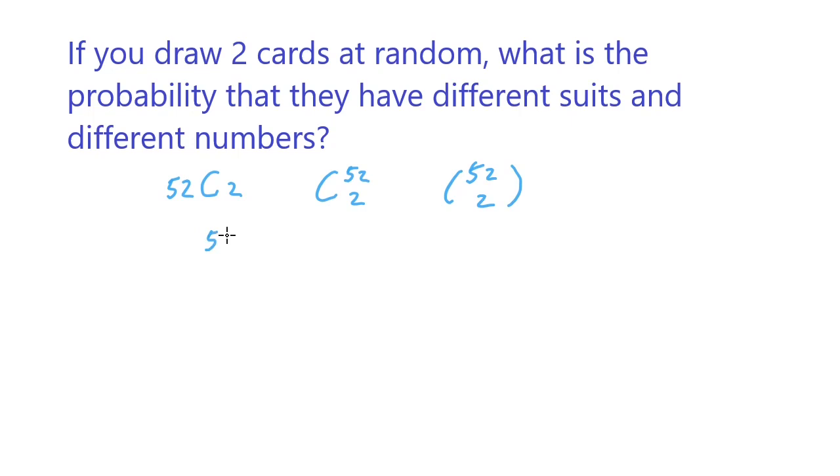The answer is going to be 52 factorial divided by 2 factorial times 52 minus 2 factorial. If you simplify, this is basically 52 times 51 divided by 2, which is 1326.